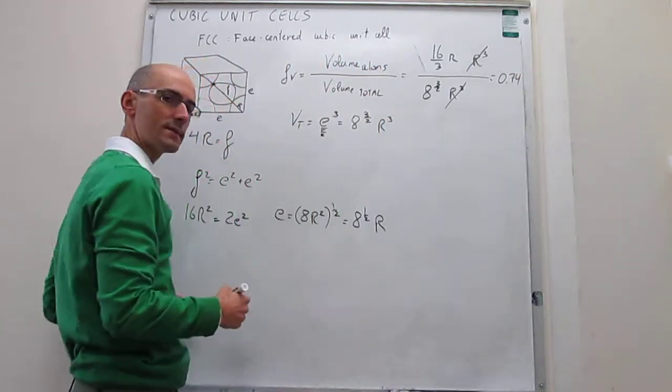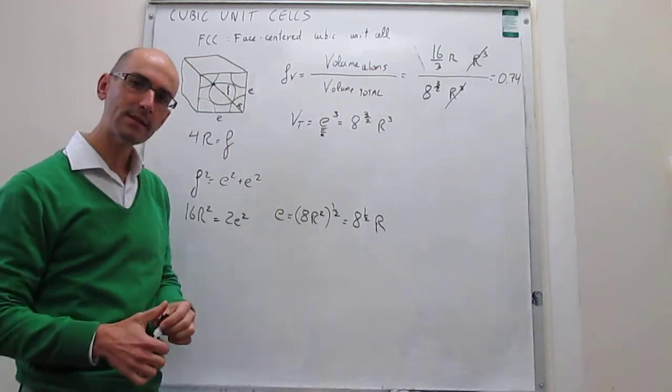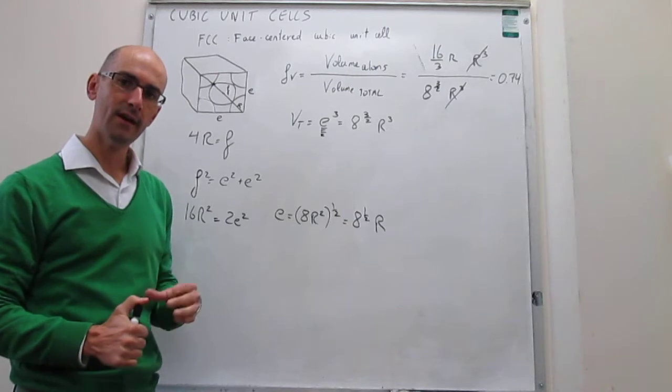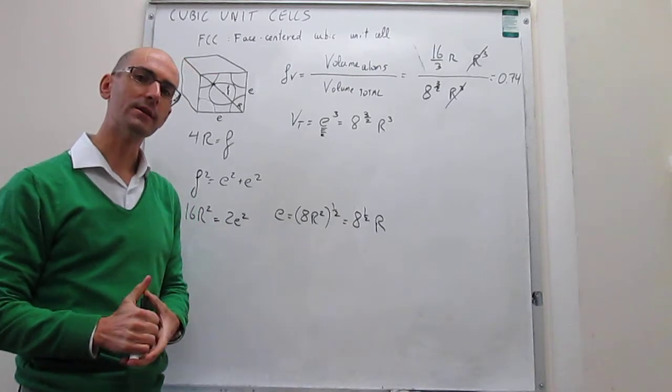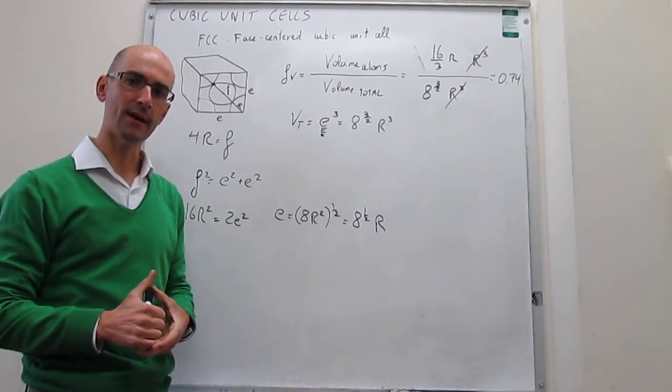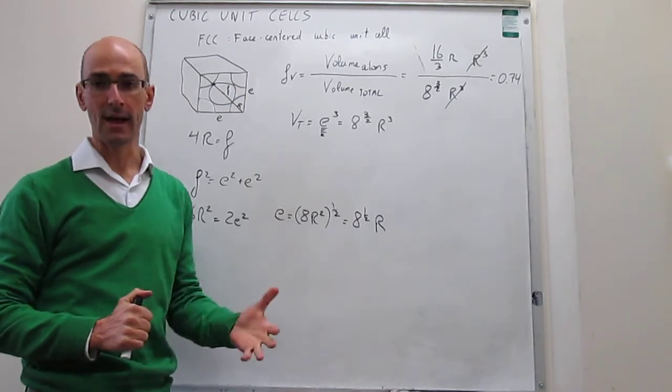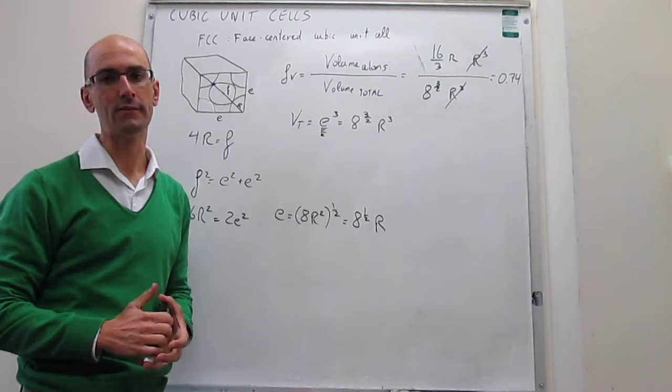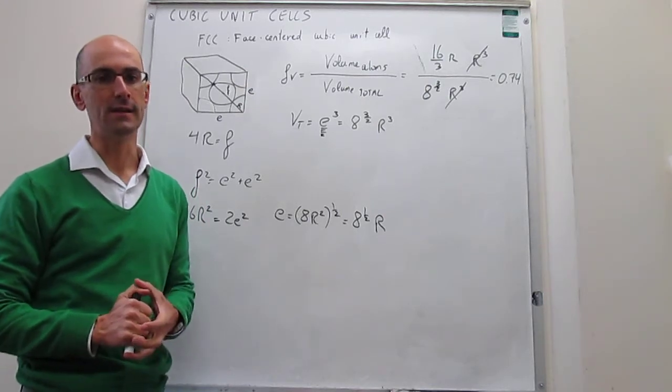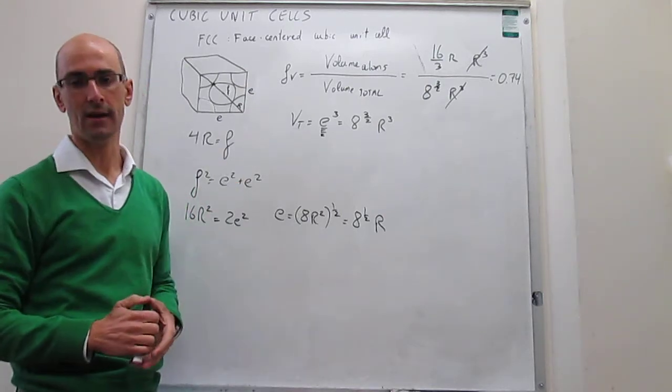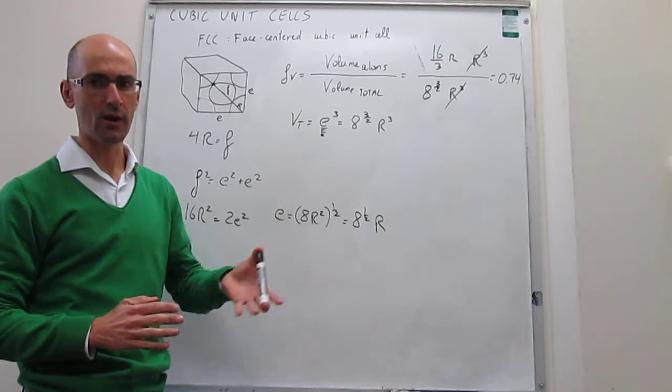Which means that in a face-centered cubic unit cell, 74% of the space is occupied by atoms. Only 26% of the space is empty. That is the highest packing efficiency that you can have in solids, and you can see what we have done here, how you can connect that packing efficiency to the geometry of this face-centered cubic unit cell.